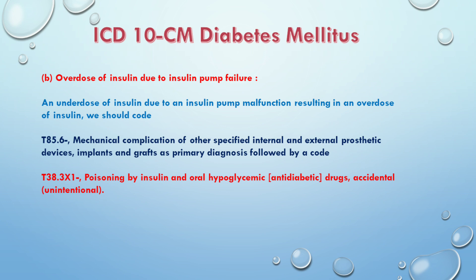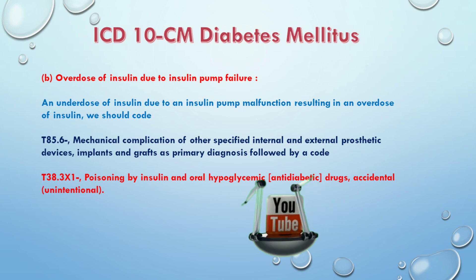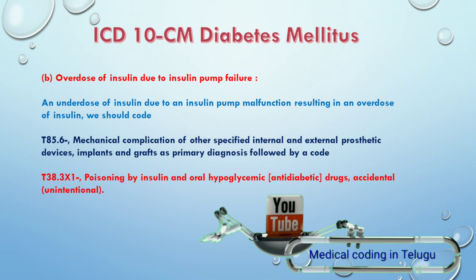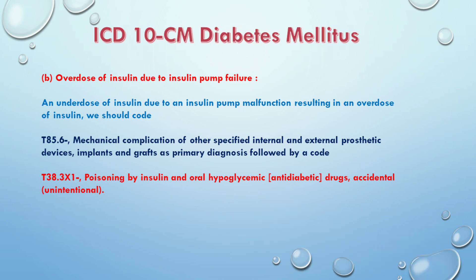Now moving to overdose: when insulin is over-dosed due to insulin pump malfunction, resulting in an overdose of insulin, we should code T85.6 — mechanical complication of other specified prosthetic devices, implants — followed by a code T38.3X1 — poisoning by insulin and oral hypoglycemics, accidental/unintentional.